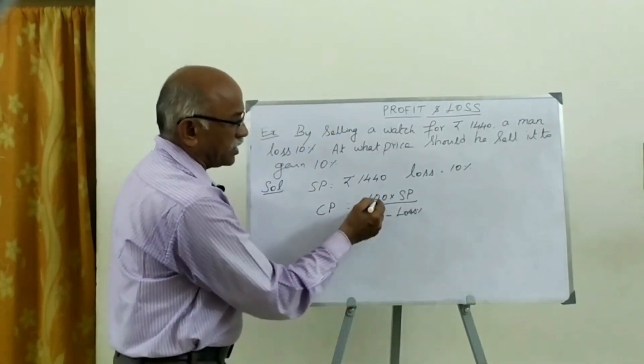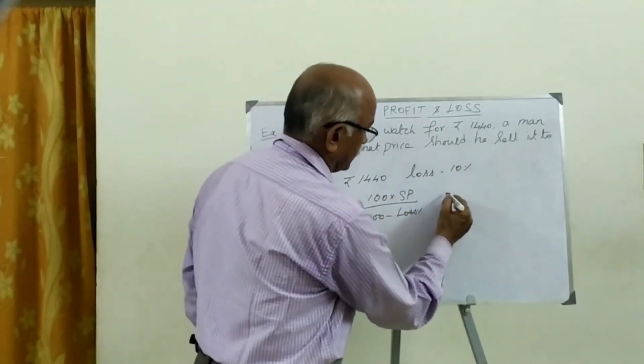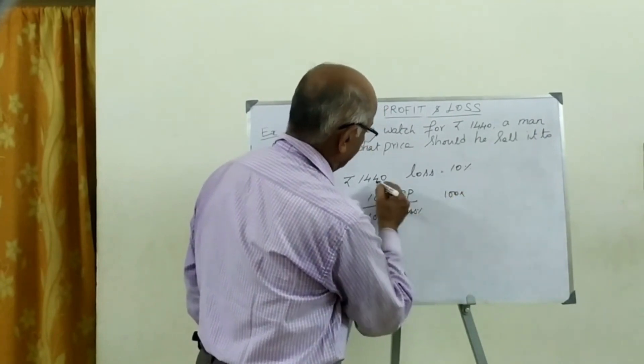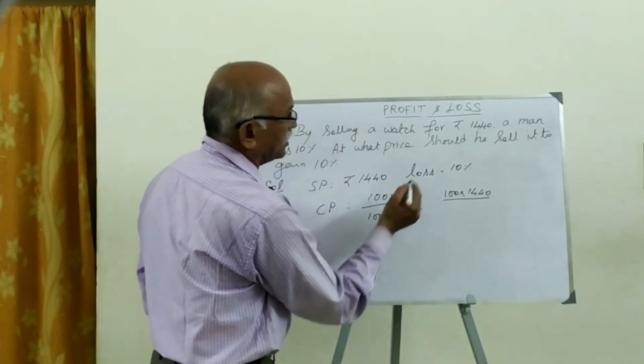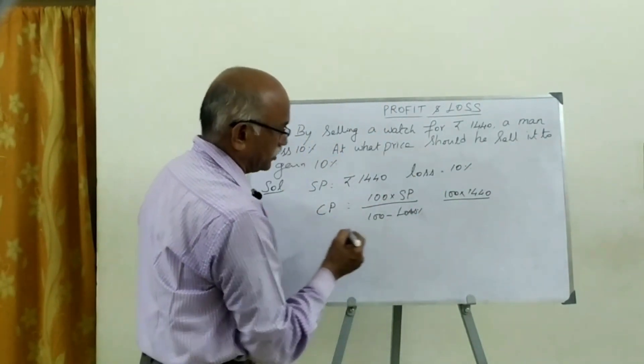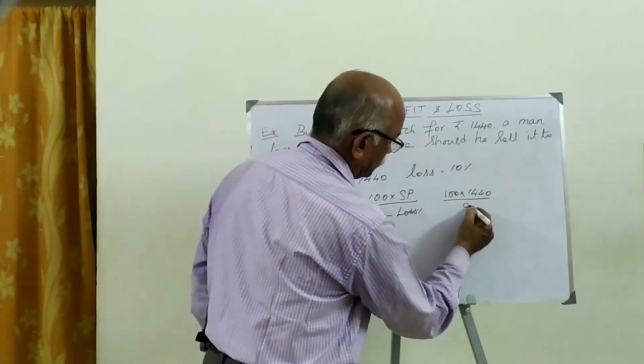100 into SP divided by 100 minus loss percentage. Okay? Now, 100 into SP, 100 into SP is equal to Rs. 1440. This is divided by 100 minus loss. Loss is equal to 10%. 100 minus loss is equal to 90.